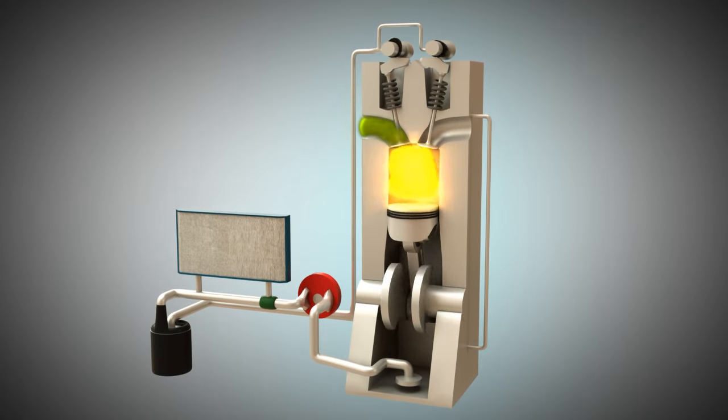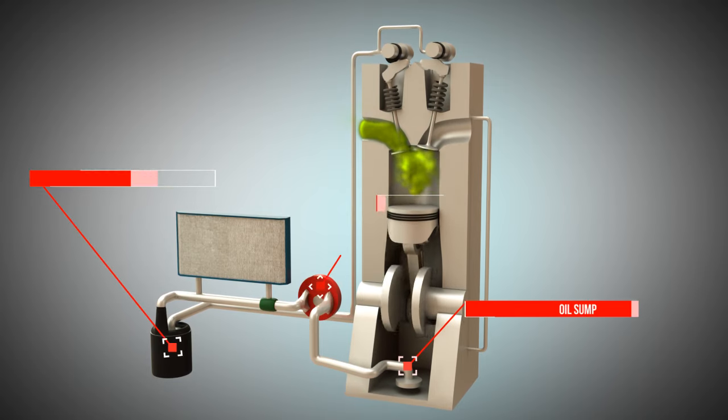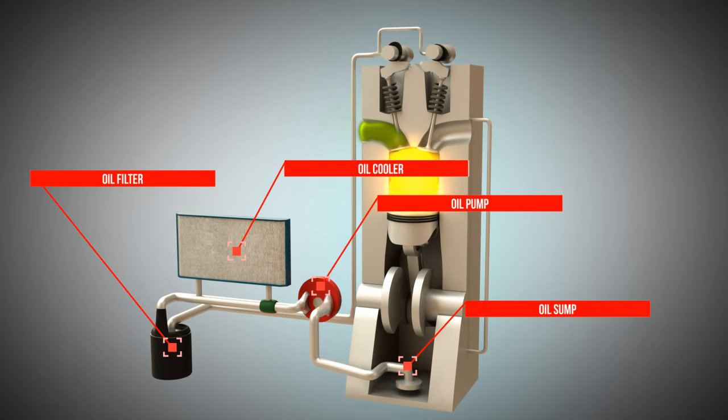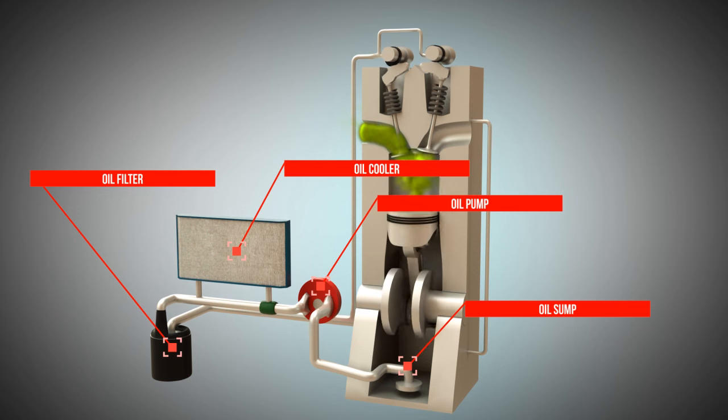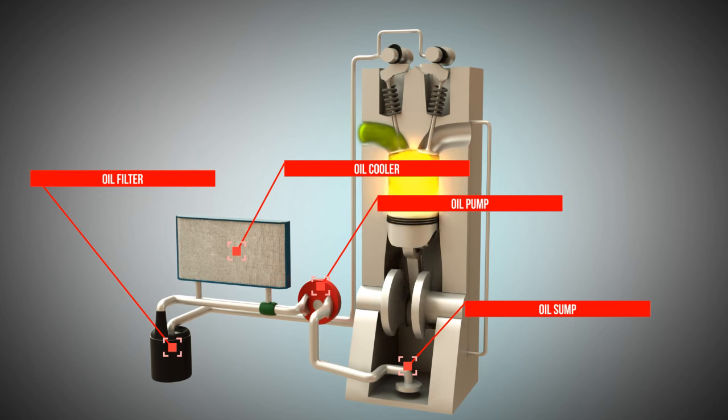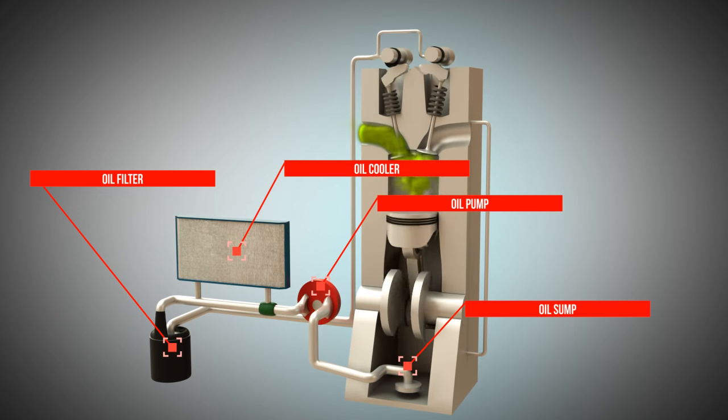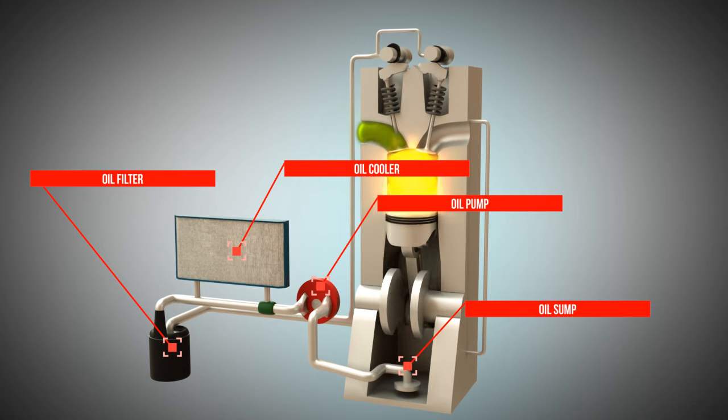Engine lubrication by means of oil is primarily used to reduce friction between moving parts and dissipate heat. In this animation, we want to describe wet sump lubrication using a four-stroke engine with only one cylinder.